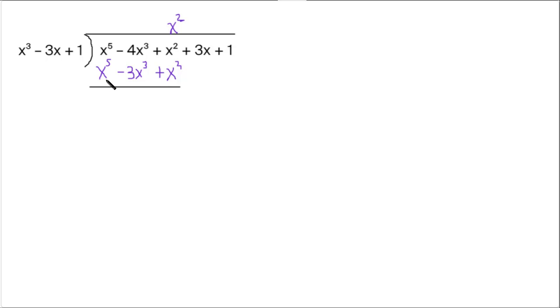So x to the fifth minus x to the fifth is nothing, so don't bother putting anything. We're at negative 4x cubed subtract negative 3x cubed. So it ends up being negative 4x cubed plus 3x cubed. So that's just plain old x cubed.